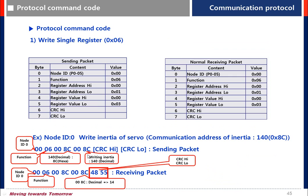Write single register — refer to the sending packet table. In this example: node ID, function code, register address high and low. The initial address is 008C, and the value written to address 8C is also shown. The initial address 008C is clearly indicated.